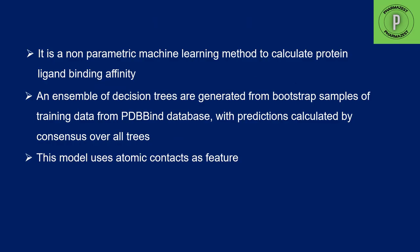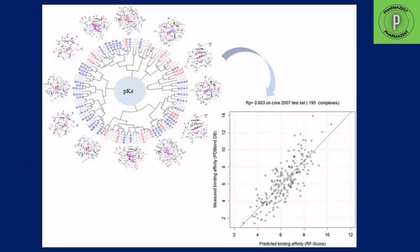The random forest scoring method is a non-parametric machine learning method which is useful to calculate protein-ligand binding affinity. It is an ensemble of decision trees generated from bootstrap samples of training data from the PDB-bind database, with predictions calculated by consensus over all the trees. It uses atomic contacts as features in its development. This is how the graphical representation of this algorithm looks — it takes input from the PDB-bind database.